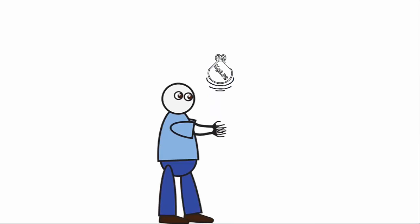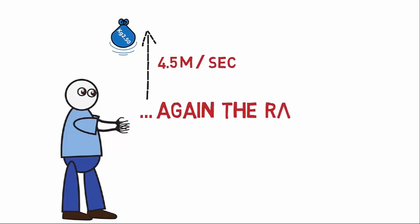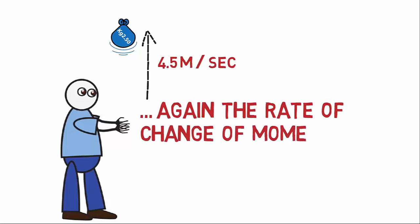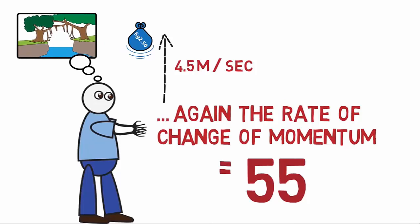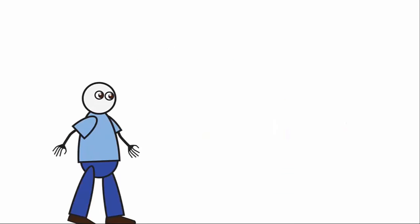He changes the speed of the bag from 0 to 4.5 meters per second very quickly, just before the release, let's say in 0.2 seconds. And again, the rate of change of momentum, or the force Gokul applies, is 55 kg, which will go on the bridge. So Gokul applies an additional 55 kg on the bridge.